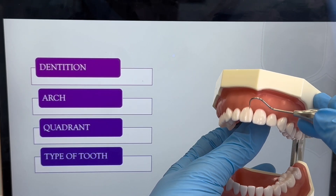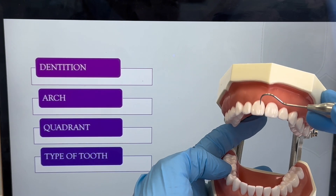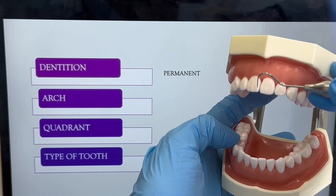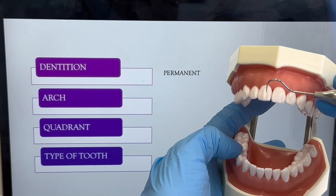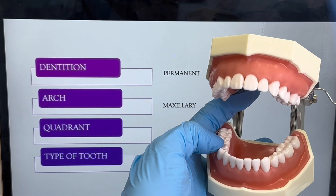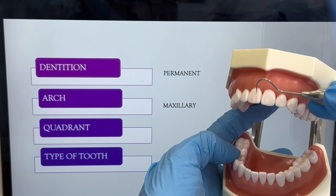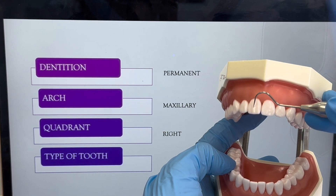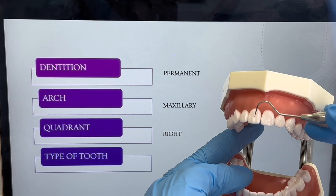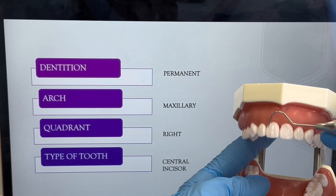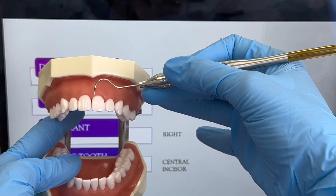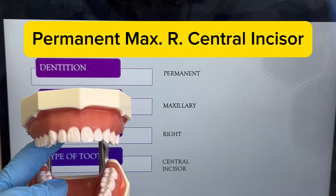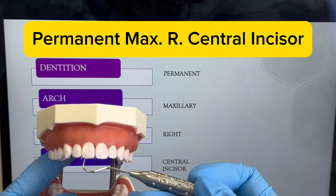Let's start with this tooth. What dentition is this? Permanent dentition. In what arch is it located? The maxillary. In what quadrant? The right quadrant, because it's the patient's right. And what type of tooth is this? Central incisor — it's right in the center. So the name of this tooth would be: Permanent Maxillary Right Central Incisor.